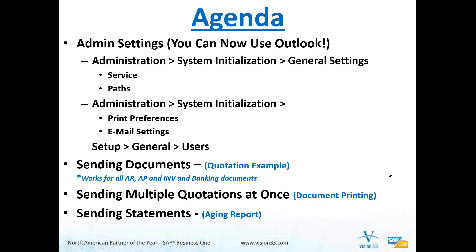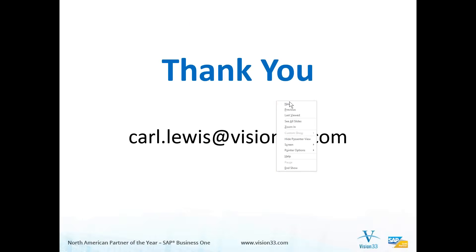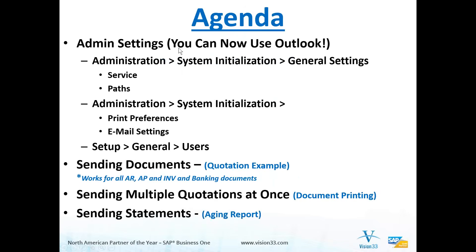Here's our agenda for today, just so you'll have a little snapshot of this in your mind. We're going to take a look at the administrative settings indicated for this new emailing function. Notice this line right here — this is really important: you can now use Outlook. In order to send email out of SAP Business One in times past, you had to use something called the SBO — SAP Business One — mailer.